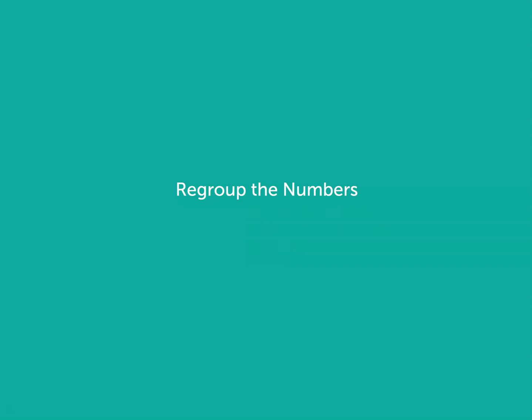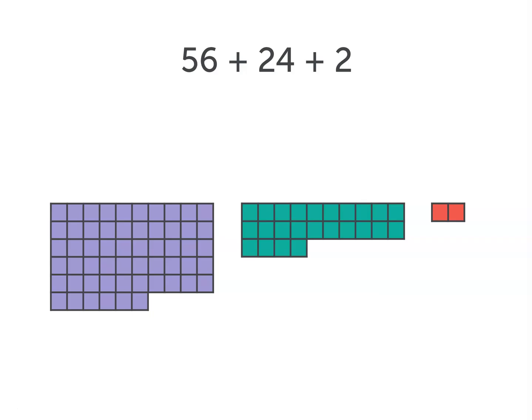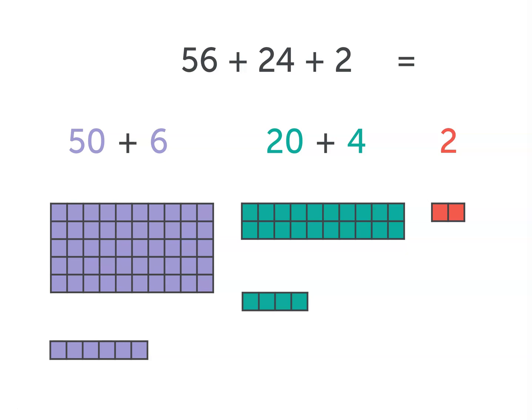One strategy you can use is to regroup the numbers. Instead of writing 56 plus 24 plus 2, we can think of 56 like 50 plus 6. We can think of 24 like 20 plus 4, and the number 2 stays the same.